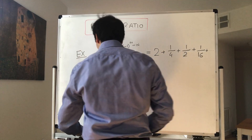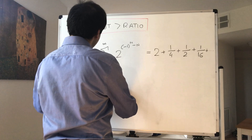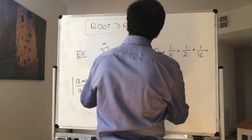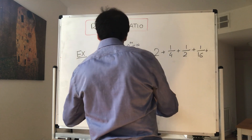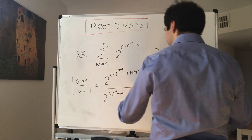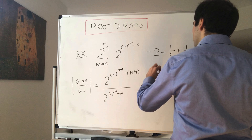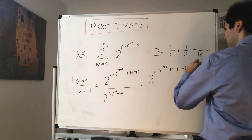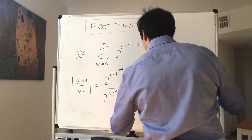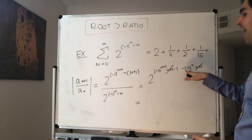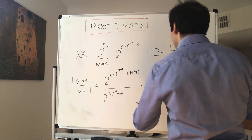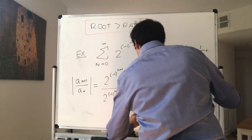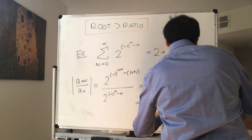Let's calculate the ratio of successive terms: a_{n+1} / a_n. Since everything is positive, we get 2^((-1)^(n+1) - (n+1)) over 2^((-1)^n - n), which simplifies to 2^((-1)^(n+1) - n - 1 - (-1)^n + n). Since (-1)^(n+1) = -(-1)^n, this becomes 2^(-2·(-1)^n + (-1)) — wait, simplified: 2^(-2·(-1)^n - 1).